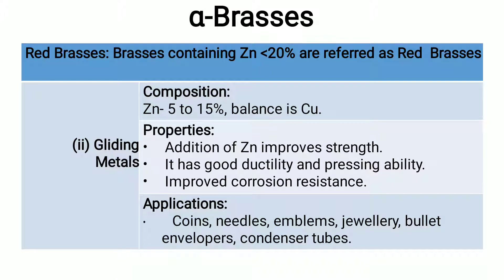The second type of red brass is gilding metal, with a composition of 5 to 15% zinc, balance copper. The addition of zinc improves strength, and it has good ductility and pressing ability with improved corrosion resistance. Applications of gilding metal include coins, needles, emblems, jewelry, bullet envelopes, and condenser tubes.